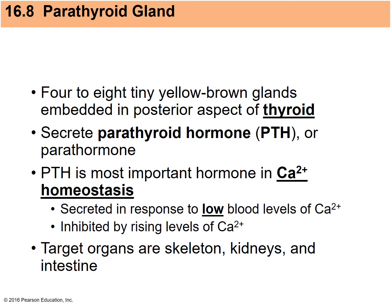The parathyroid gland consists of four to eight small glands on the posterior side of the thyroid, depending on the individual. They secrete parathyroid hormone, or PTH, which plays a huge role in calcium homeostasis. Calcitonin is released with high calcium levels; PTH is released in reverse when calcium levels in the blood are low.